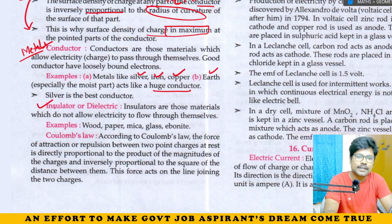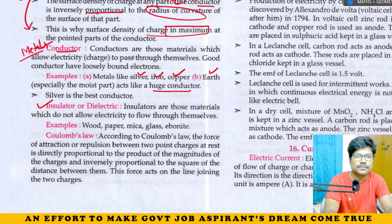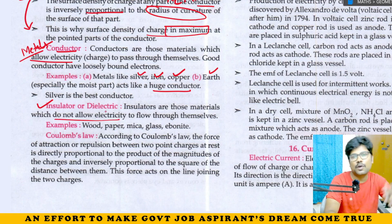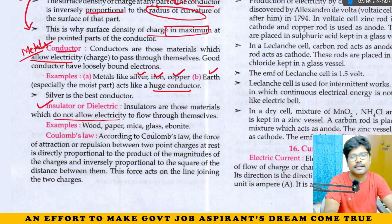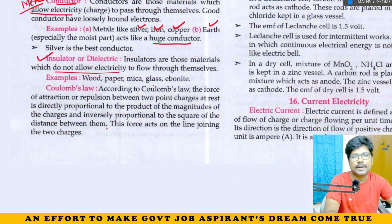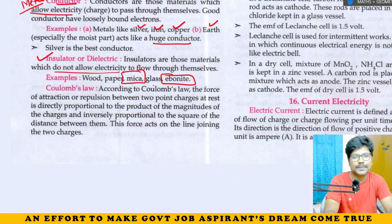Insulator, or dielectric. A conductor allows electricity. An insulator does not allow electricity to flow or to pass through them. Examples: wood, paper, mica, glass, ebonite. Ebonite is important. Ebonite and mica are important insulators.